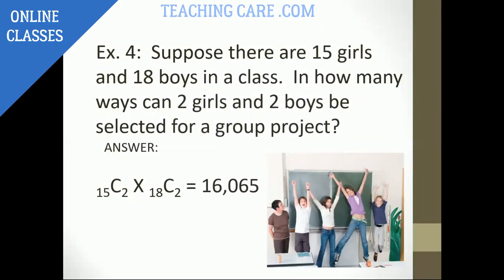Suppose there are 15 girls and 18 boys in a class. In how many ways can two girls and two boys be selected? So, here it is like a combination you have. 15 girls, two girls you are taking from that. So it's a combination. You can choose any girls. There is no order for that. 18 boys, two boys you can take from that.